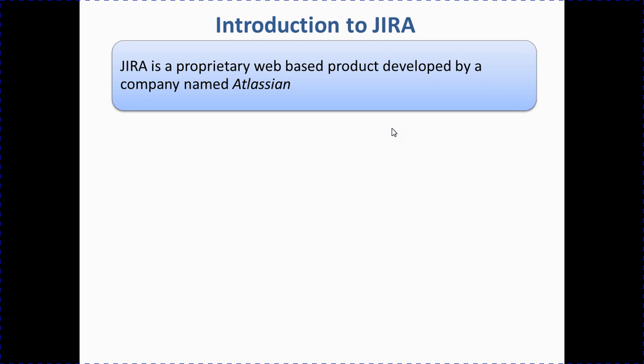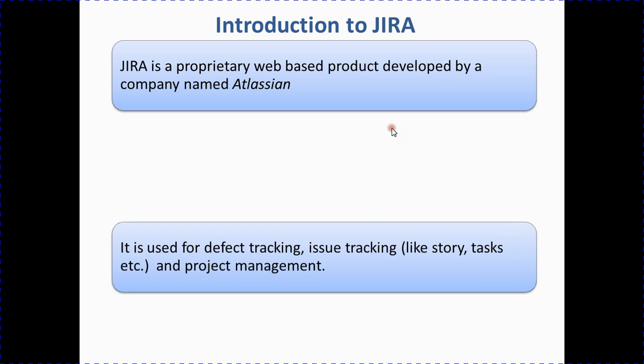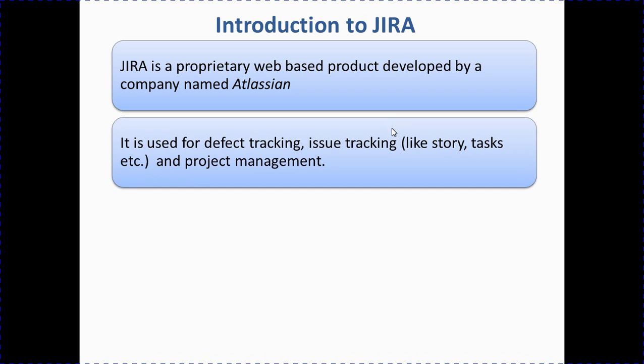A little bit of introduction about Jira. Jira is a proprietary web-based product developed by a company known as Atlassian. It is used for defect tracking and issue tracking. Issues can be anything like stories, tasks, epics, defects, and for project management. The project management it supports is agile project management, which includes Kanban and agile.